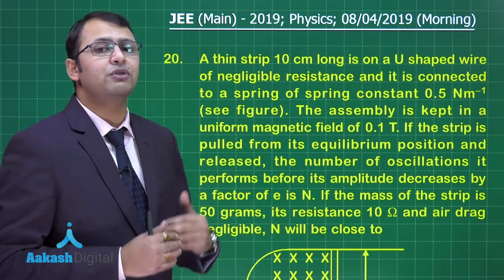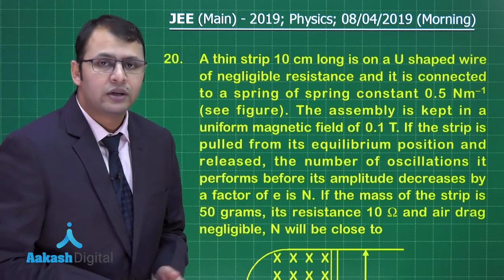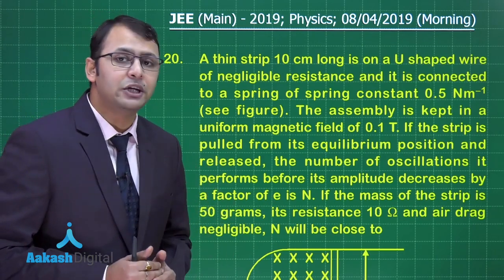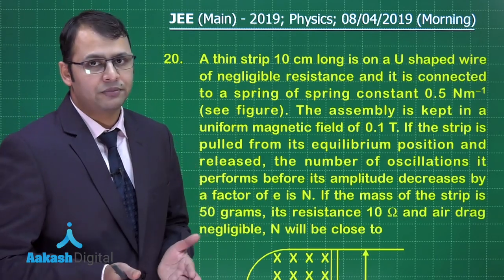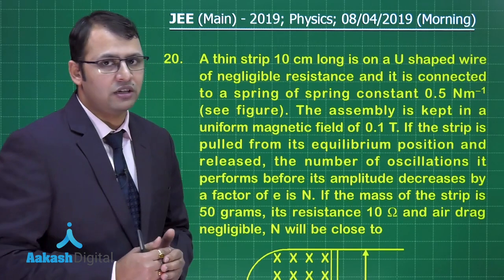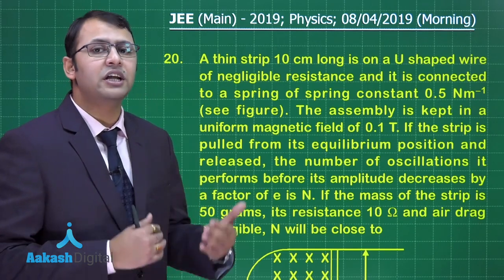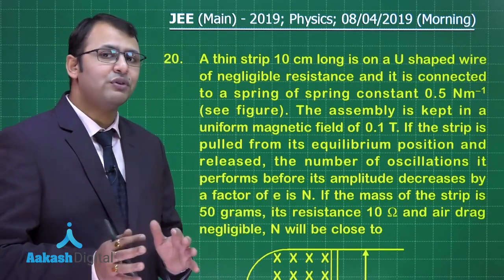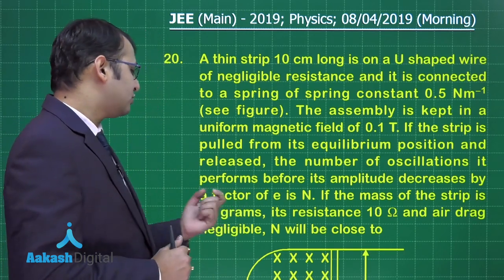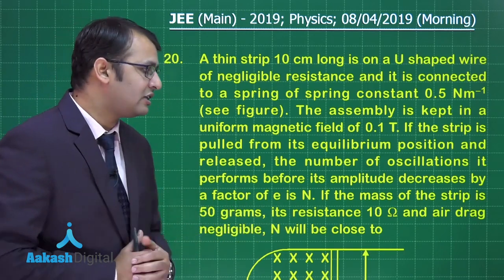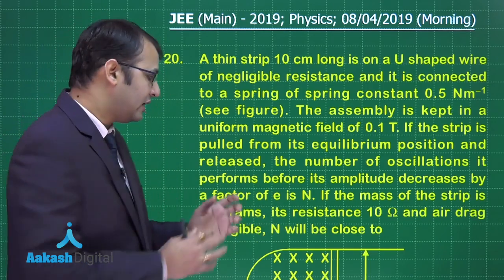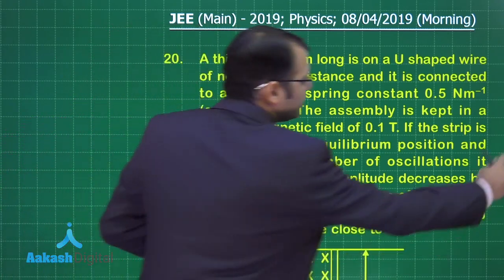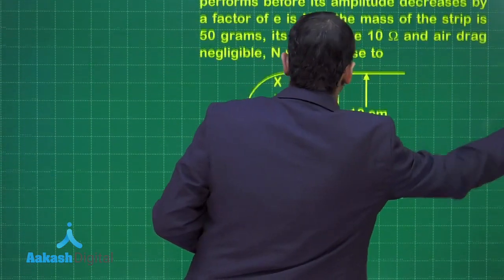Initially, if amplitude A0 is given to the rod, after some time it becomes A0/e due to damping. During that duration it performs n oscillations, which we need to find. The mass of the strip is 50 grams, resistance is 10 ohms, and air drag is neglected.